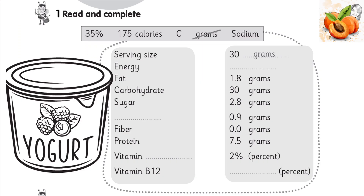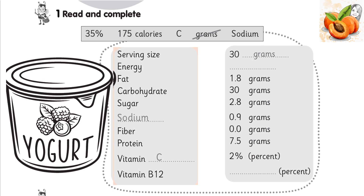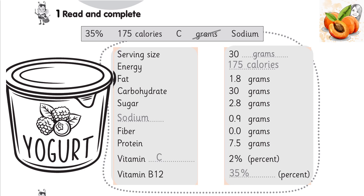Exercise 1. Read and complete. This shows information about the nutrients in the yogurt. Serving size: 30 grams. Energy: 175 calories. Fat: 1.8 grams. Carbohydrate: 30 grams. Sugar: 2.8 grams. Sodium: 0.9 grams. Fiber: 0.0 grams. Protein: 7.5 grams. Vitamin C: 2%. Vitamin B12: 30%.